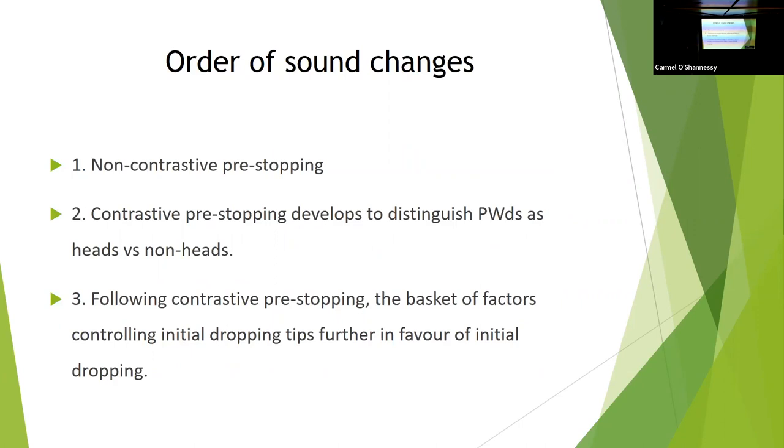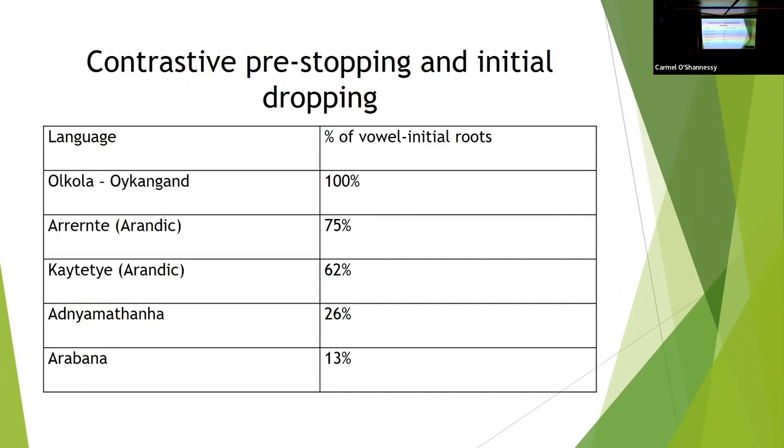And basically my suggestion is you had non-contrastive pre-stopping which is motivated by quite different things and not what I'm talking about today. Contrastive pre-stopping develops to distinguish essentially prosodic words which are lexical morphemes from prosodic words which are grammatical morphemes that assists you in breaking up the speech stream. Obviously it's only a certain quantitative factor. It's not going to be an absolute factor. Once you've developed contrastive pre-stopping, then that shifts the balance in the basket of factors that determine initial dropping slightly towards a positive, more towards positive. It's more favorable that you'll get initial dropping if you already have contrastive pre-stopping.